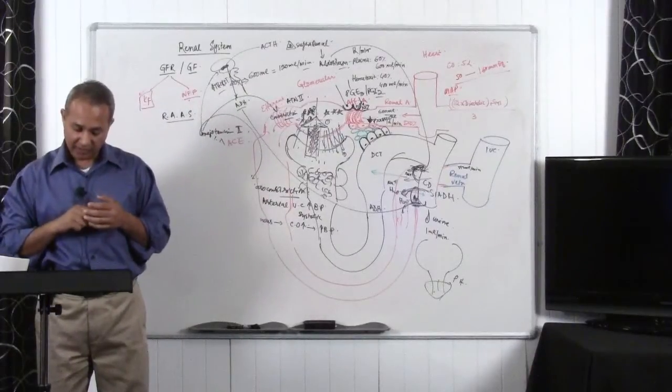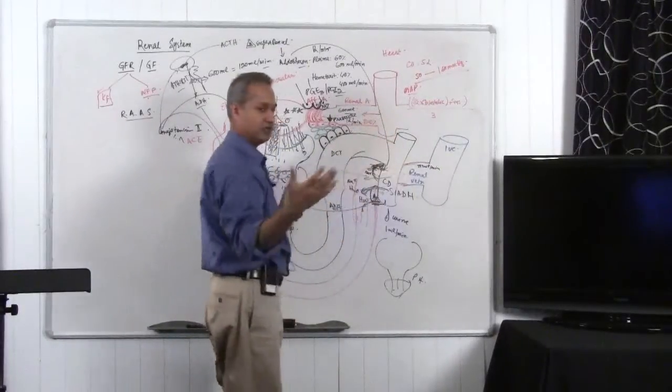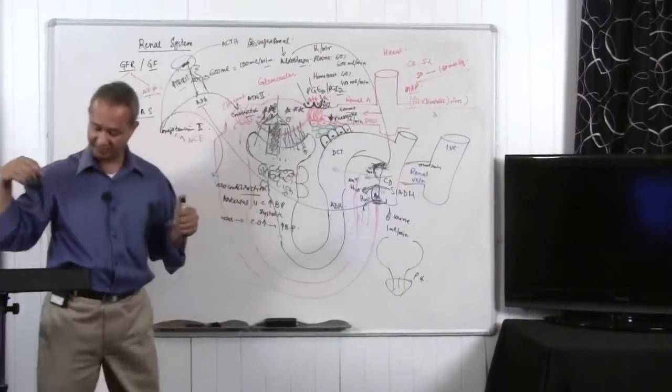Effective arterial blood volume. So we know that the blood volume, if that reduces, that would mean reduced blood pressure, reduced GFR. If blood volume increases, increased blood pressure, increased GFR.